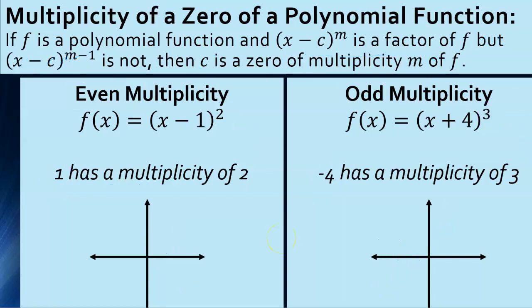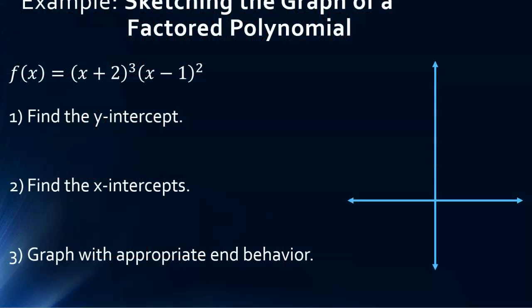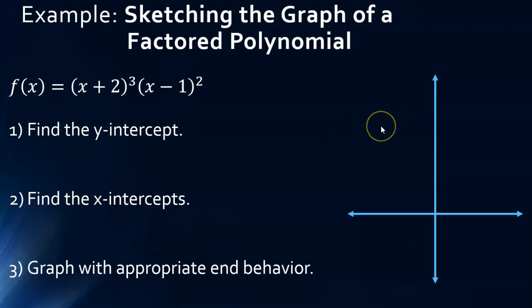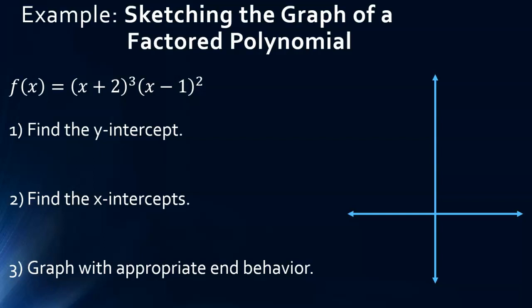Let's look at some examples where we might have more than one thing going on with the graph. We're going to sketch the graph of a factored polynomial. We're going to first find the y-intercept. When we had something in standard form it was easy — the y-intercept was whatever the constant was. But this is in factored form, so in order to find the y-intercept we're going to put 0 in for x.